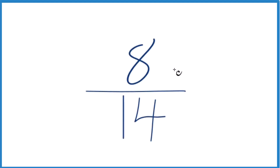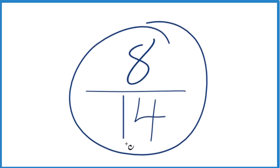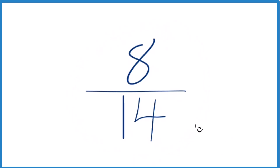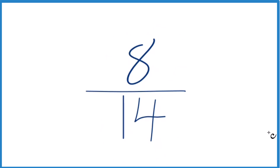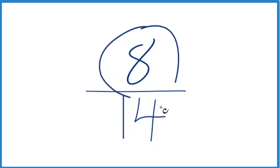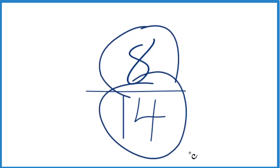All right, so here's how you simplify the fraction 8/14 down to lowest terms. What we want to do is find another fraction that's equivalent to 8 divided by 14, just simplified and in lowest terms. To do that, we need to find a common factor — something that goes into 8 and 14 evenly.